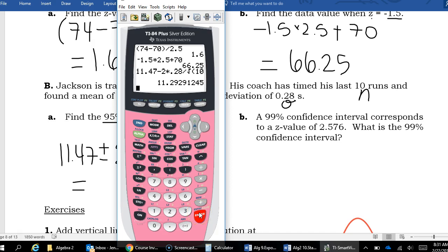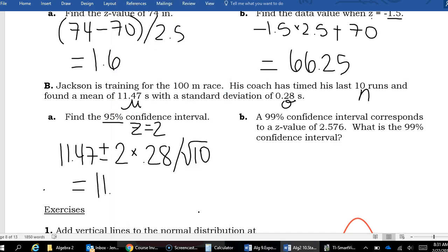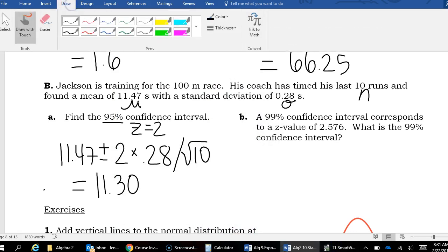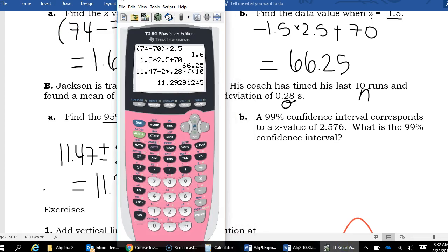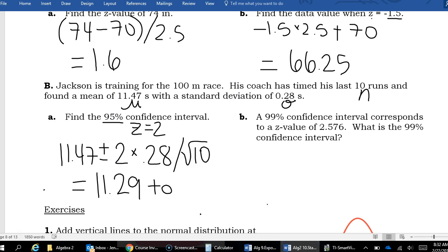So I believe his low value will be 11.29. And if I use my calculator savvy, I don't really have to retype this. Just use my arrow keys to change that plus sign right there, and I have 11.65. So I am 95% sure that on race day, Jackson will run between 11.29 seconds and 11.65 seconds.